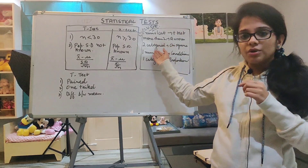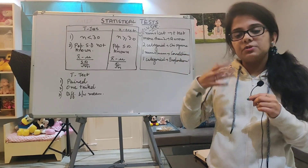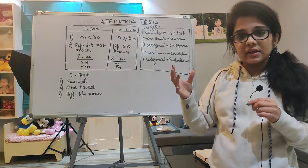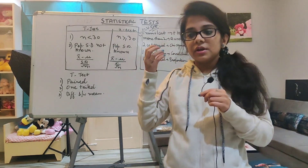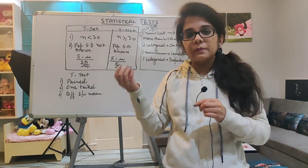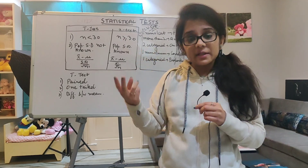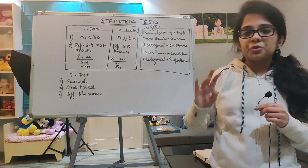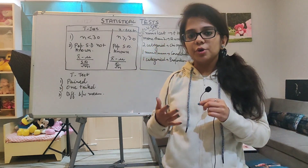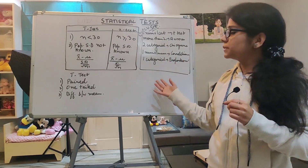If both variables are numerical, then correlation will be used. Correlation means we want to know the relation between two numerical variables. In chi-square we also check a relation — like whether the car model is dependent on age — but there both variables are qualitative. In correlation, both variables are numerical. So today in this video I talked about t-test, z-test, ANOVA, chi-square test, and correlation.